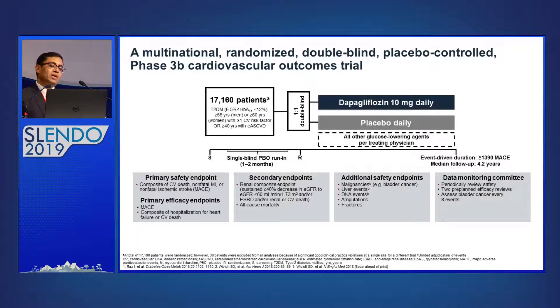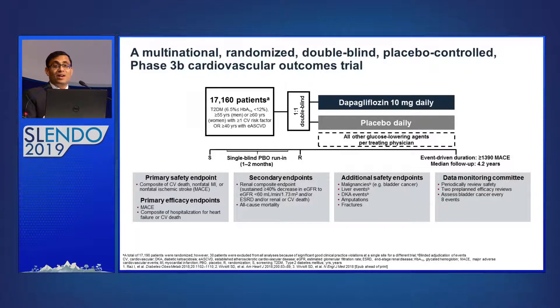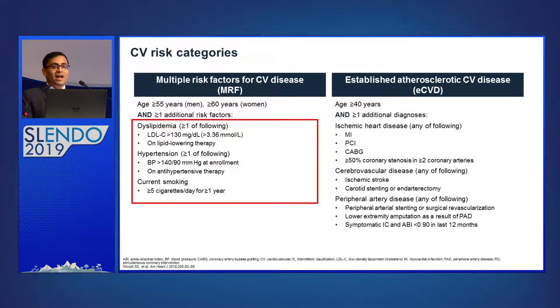The trial measured a composite cardiovascular safety endpoint: cardiovascular death, non-fatal MI, and non-fatal stroke. They also studied a composite of hospitalization for heart failure or CV death. Importantly, secondary endpoints included renal outcomes — reduction in eGFR, ESRD, or cardiovascular death.